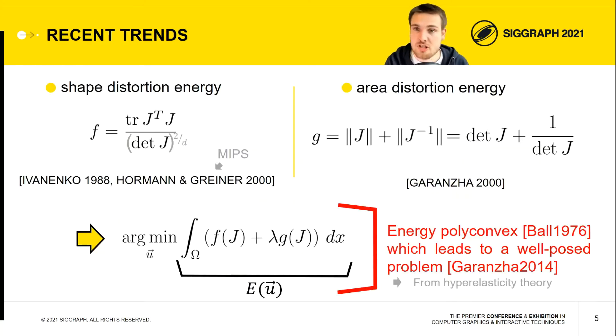To compute such maps, the recent trend is to use a mix of two energies. The first one is a shape distortion energy, and the second one is an area distortion energy. The combination of the two gives an energy which is well-posed because it is polyconvex, and it comes from hyper-elasticity theory.